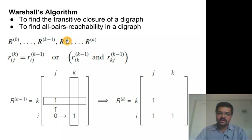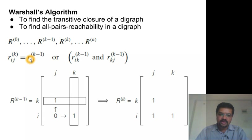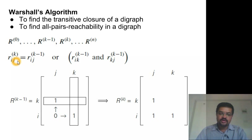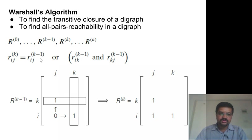We can obtain Rk from Rk-1 only — we don't need any other previous matrices. An element in Rk is 1 if there is already a 1 in Rk-1 at i,j, meaning we can reach from i to j using only k-1 vertices as intermediate vertices, which also satisfies Rk. If there is no path from i to j in Rk-1, but there is a path from i to k and a path from k to j, then by transitivity there is a path from i to j with k as an intermediate vertex, so R[i][j] becomes 1.